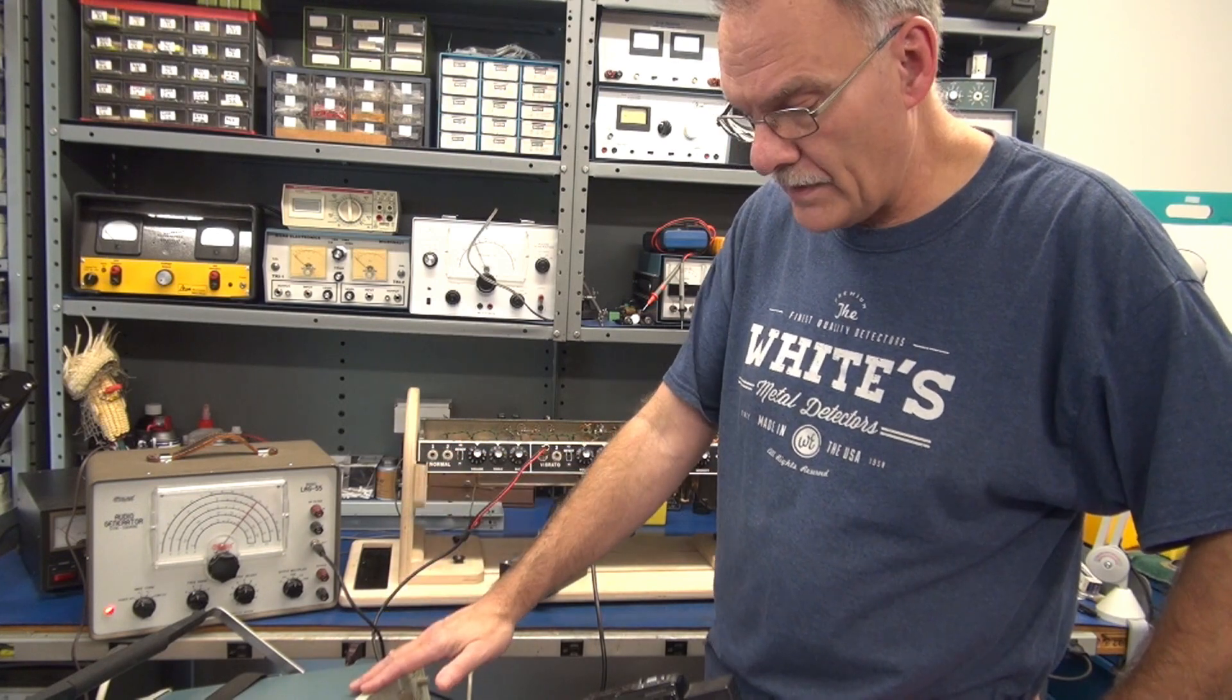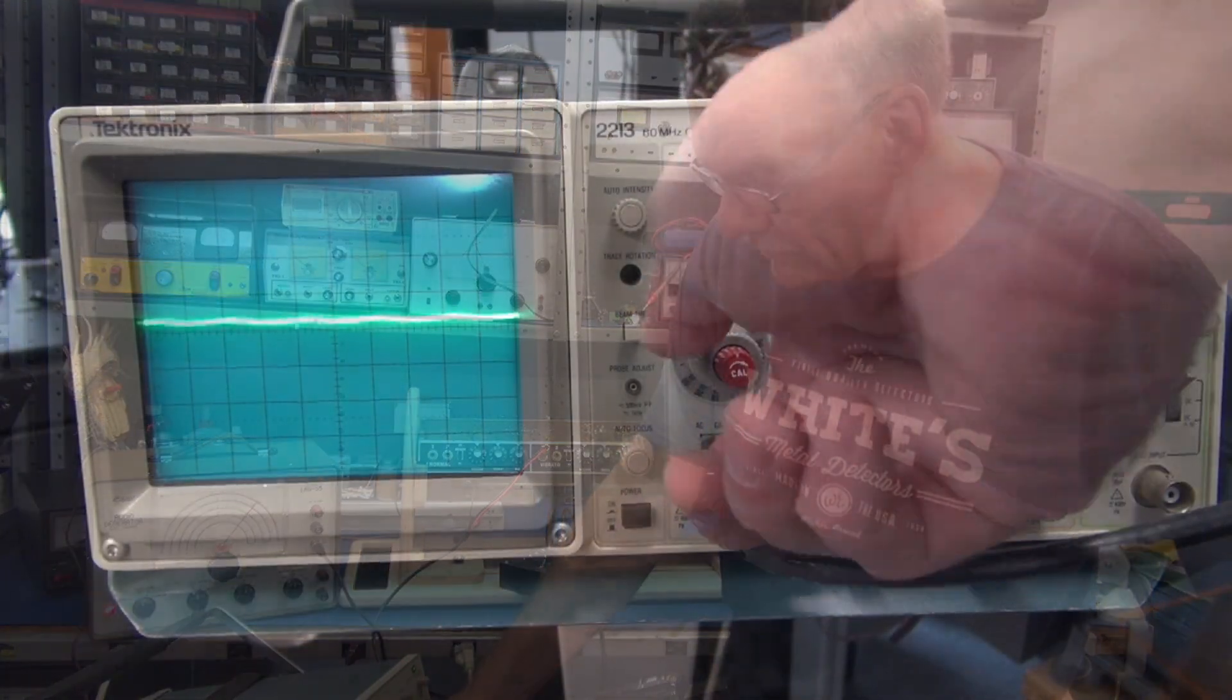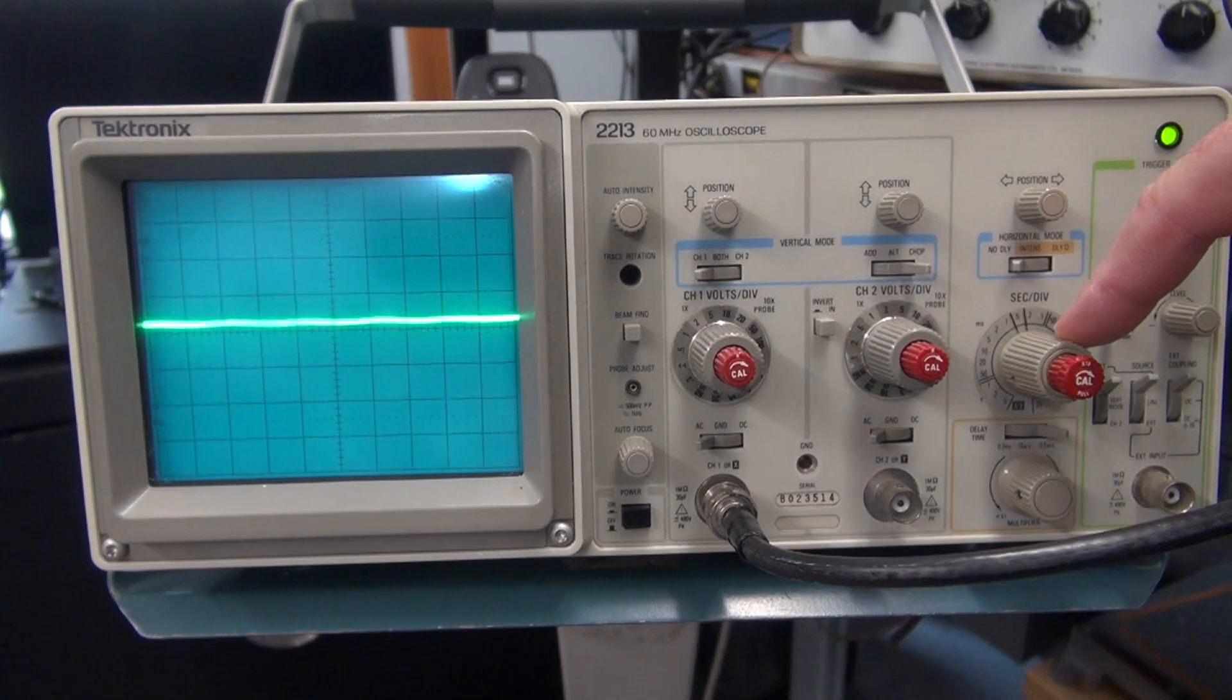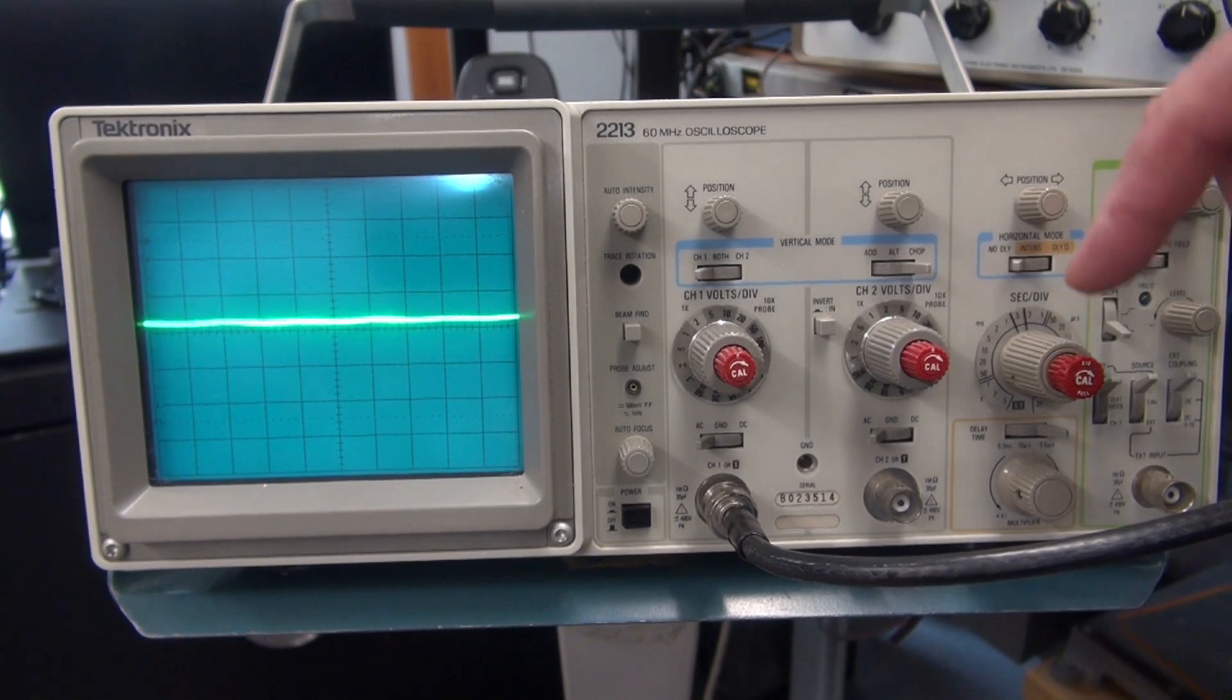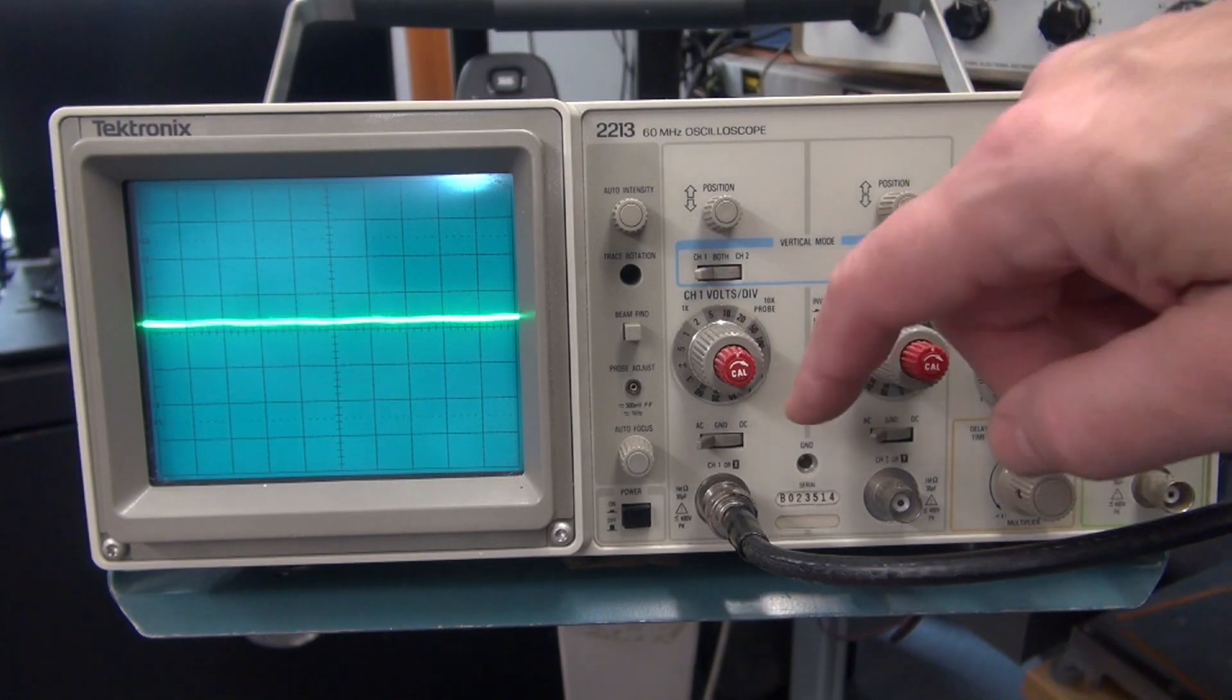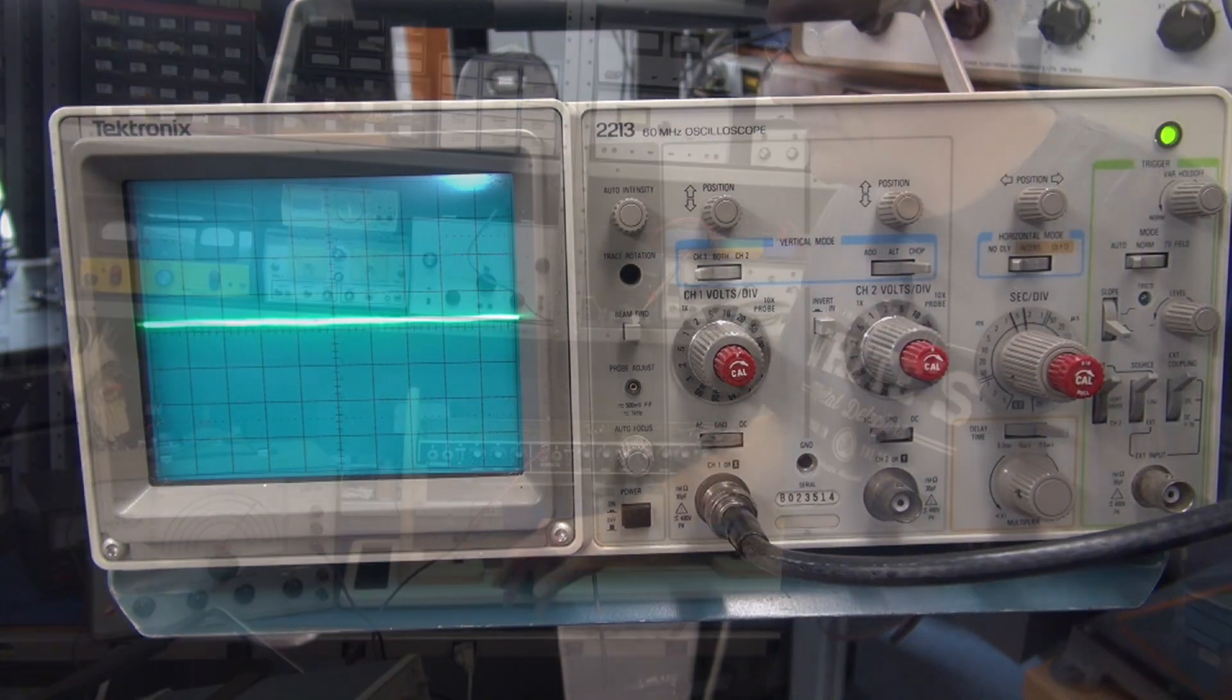Now we're going to put the oscilloscope at two volts per division. The time is going to be set for 0.5 milliseconds. That's all you need to do for the next test. Make sure your coupling is at AC.